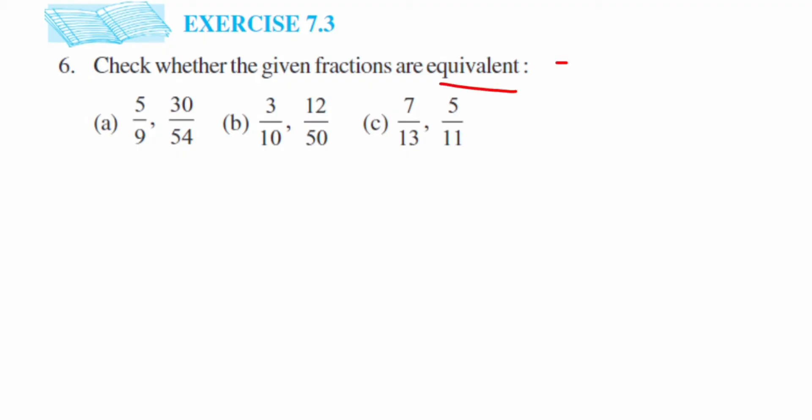We know that equivalent fractions are obtained by either dividing or multiplying the numerator and denominator with the same number. We have to check if the given pairs are equivalent fractions or not. The first question is 5/9 and 30/54.